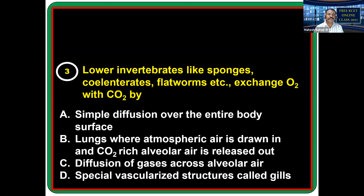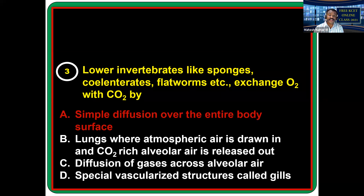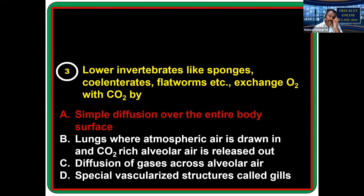Third question: lower invertebrates like sponges, cnidarians, flatworms, etc. Their body structure is not very complex, so exchange of gases takes place through simple diffusion over the entire body surface.